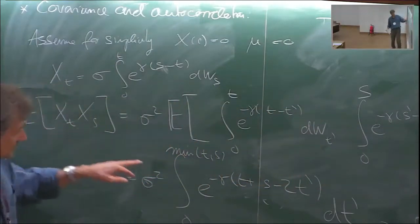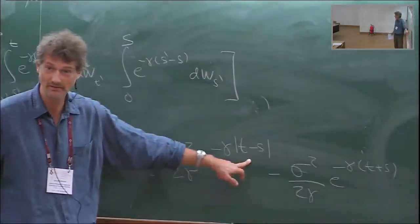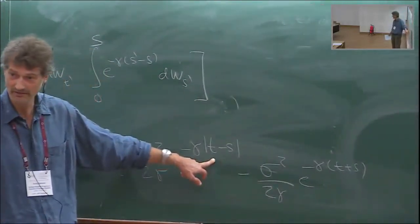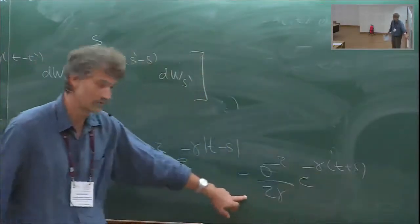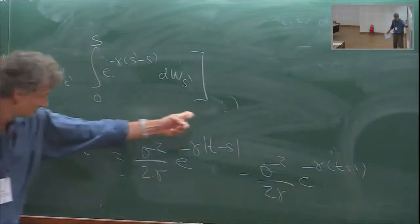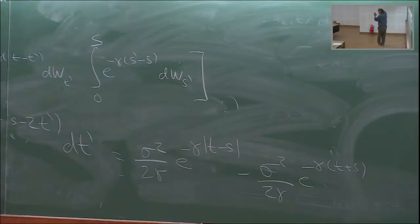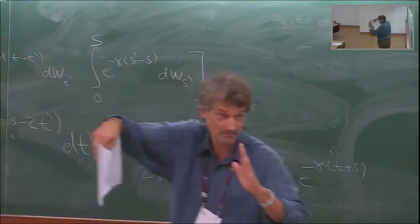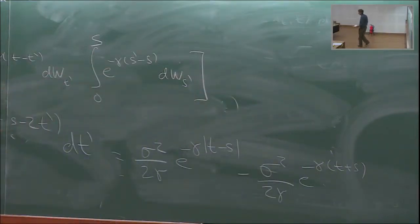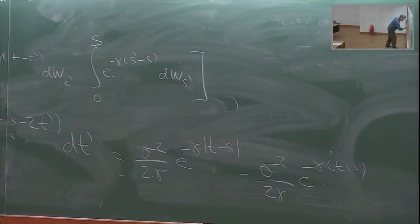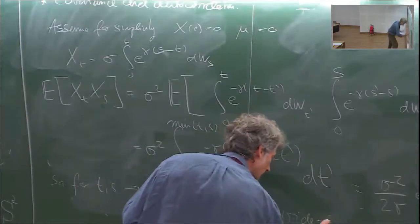This evaluates to: σ²∫₀^{min(t,s)} e^{-γ(t+s-2s')} ds' = σ²/(2γ) e^{-γ|t-s|} - σ²/(2γ) e^{-γ(t+s)}. As t,s → ∞, the second term goes to zero, and the covariance depends only on t-s. So for large t and s, this process is wide-sense stationary.